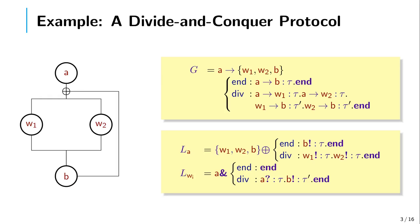I am going to illustrate the idea of global types, local types and projection using a divide and conquer protocol. In this protocol, participant a will start by either splitting an input and sending it to w1 and w2, which will then send their results to participant b, or a can choose to send directly the input to b. At the global type level, this is a choice: a will send to w1, w2, and b either label end or label div. If a sends label end, then a will send to b something of type t and the protocol will end. Otherwise, a will send to w1 and w2 something of type t, and then w1 and w2 will send something of type t prime to b, and then the protocol will end.